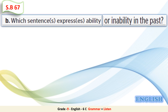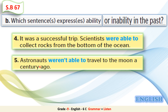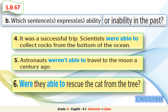Now let's move on to Question B: Which sentences express ability or inability in the past? Sentence 4 – 'Scientists were able to collect rocks from the bottom of the ocean' – uses 'were able to' for ability in the past. Sentence 5 – 'Astronauts weren't able to travel to the moon a century ago' – uses 'weren't able to' for inability. Sentence 6 – 'Were they able to rescue the cat from the tree?' is the question form. So we use 'was' or 'were' plus 'able to' to express ability or inability in the past.